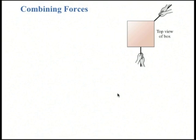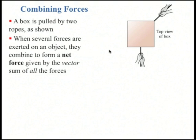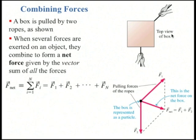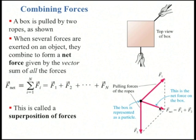You can do combinations of forces. Here's a box being pulled by two ropes in different directions. When you have several forces acting on an object, the net force is the vector sum of all the forces: F_net equals the sum from i=1 to n of F_i — so F1 plus F2 and so on up to F_n. Here we've used the parallelogram rule to find the net force on the box, which is down and to the right. This is called a superposition of forces.